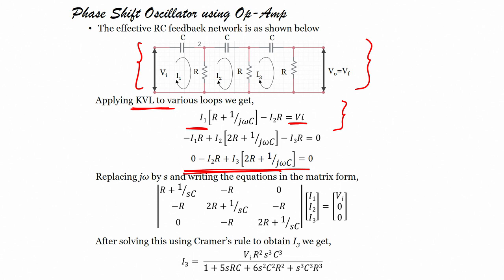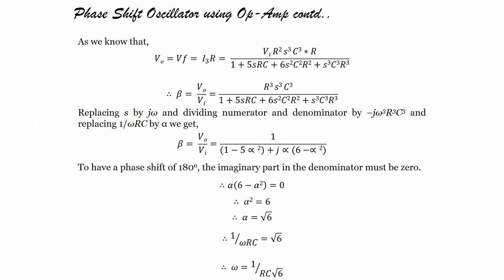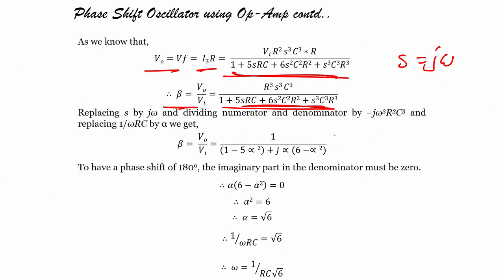Replacing jω by S and writing in matrix form, using Cramer's rule we can find I₃. Since V_O = V_F = I₃·R, substituting the value we have β = V_O/V_I. Replacing S by jω and dividing numerator and denominator accordingly, we get β equal to the resulting equation.